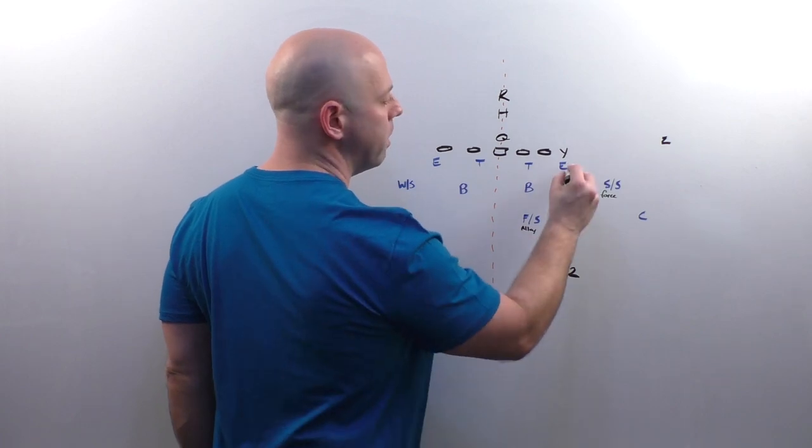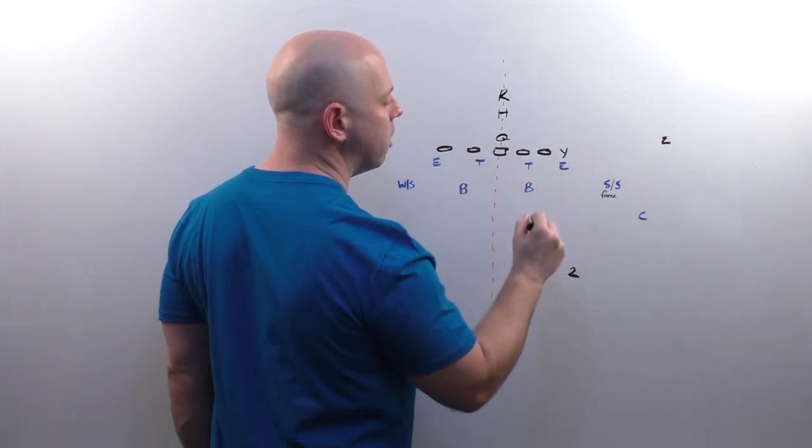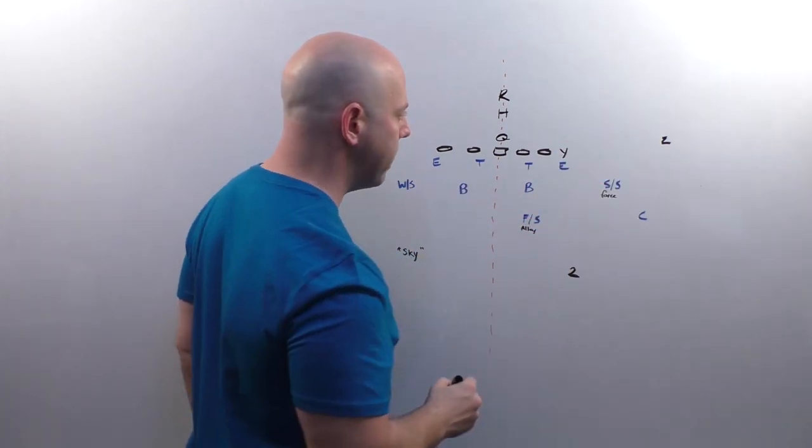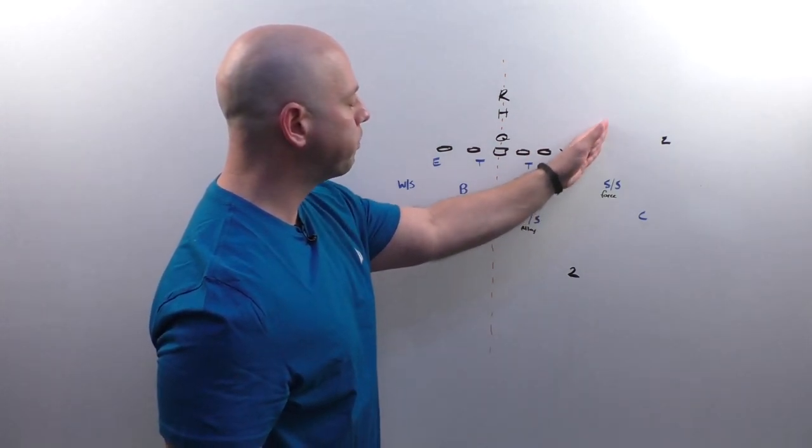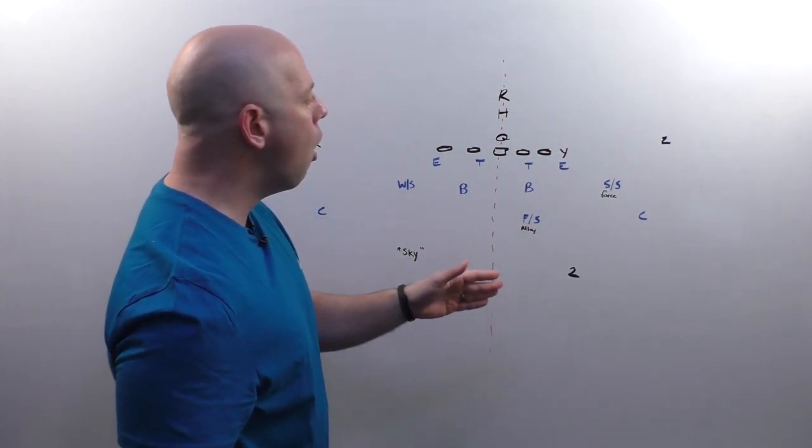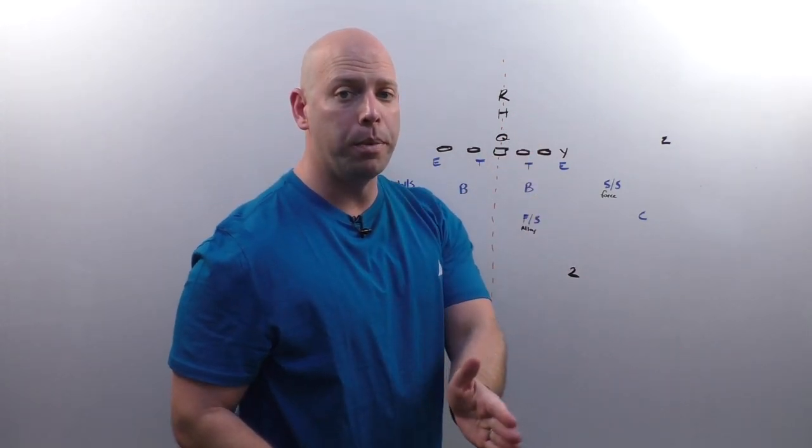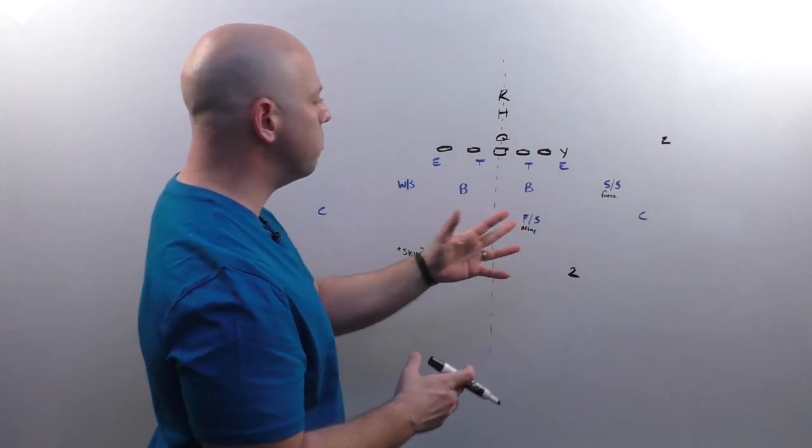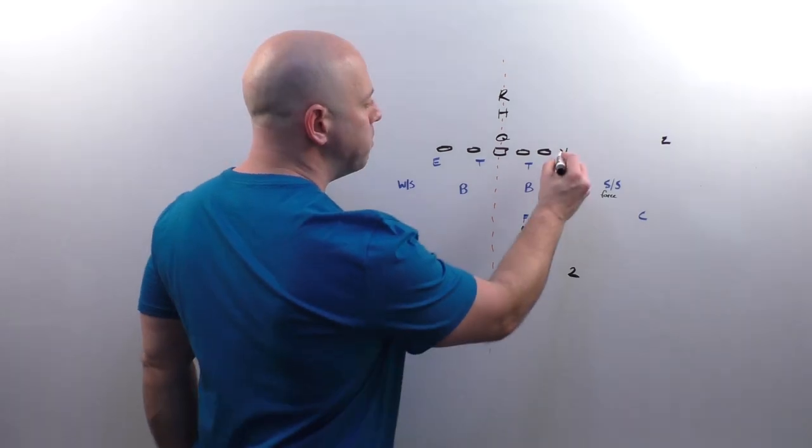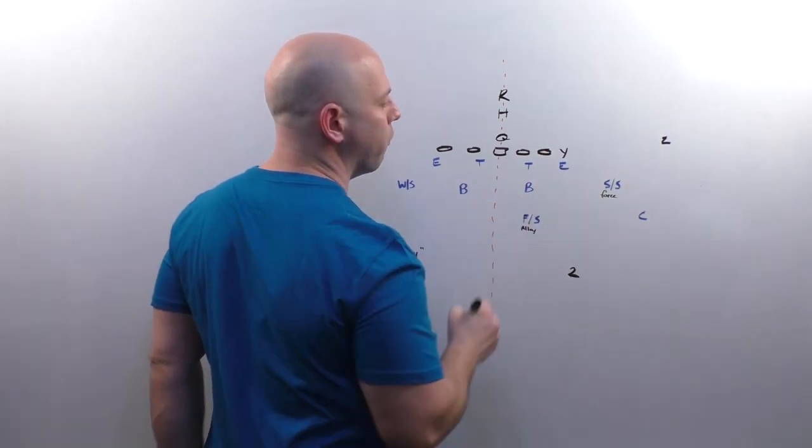He is the alley player, which is the fit between the last man in the spill, the last man under the umbrella and the force. So on the run play, he'd be the alley player on option. He's going to play quarterback to pitch. So that's his run responsibility.